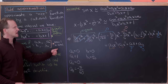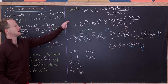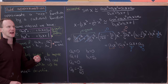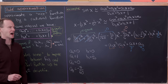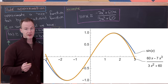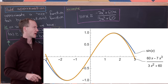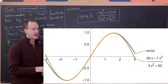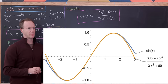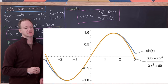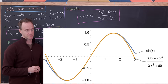Substituting all coefficients and clearing denominators gives us the (3,2) Padé rational function approximation for sine. A plot of both functions on screen confirms the quality of the approximation.